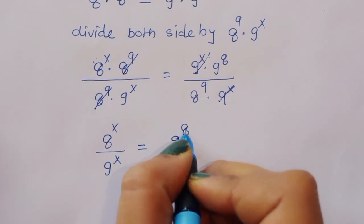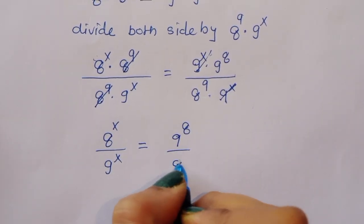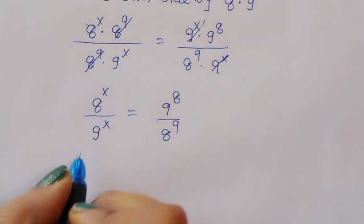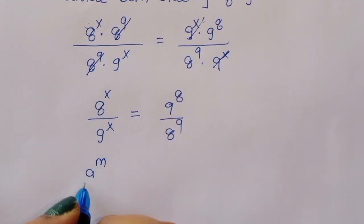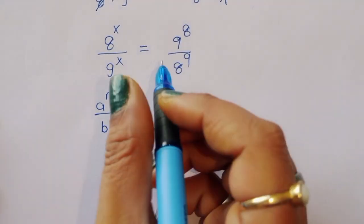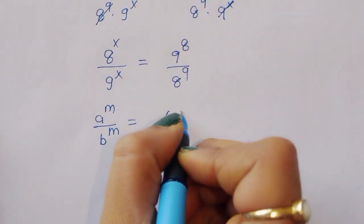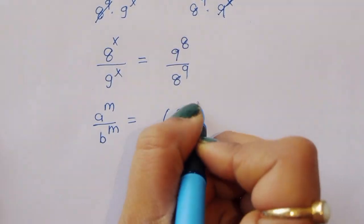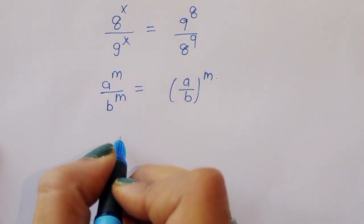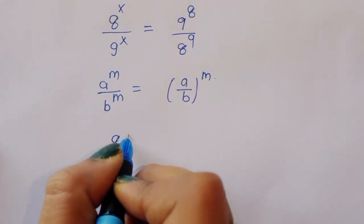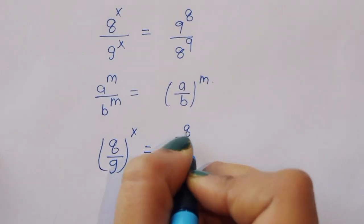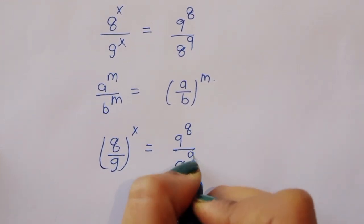Therefore, 8 power x divided by 9 power x is equal to 9 power 8 divided by 8 power 9. Using the formula a power m divided by b power m equals (a/b) power m, we get (8/9) power x is equal to 9 power 8 divided by 8 power 9.